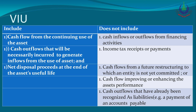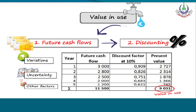To calculate value in use: determine future cash flows and the discounting rate to use. For example, year 1 to 5 future cash flows discounted at 10% — the present value of cash flows will be 9031. To calculate present value, use the formula: 1 divided by (1 + r) raised to the power n. Apply the discounting factor at 10% and multiply by future cash flows to get the present value.